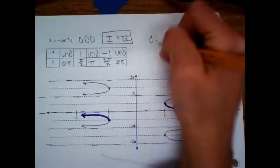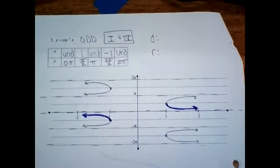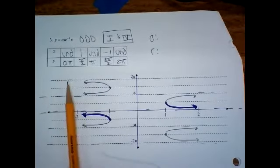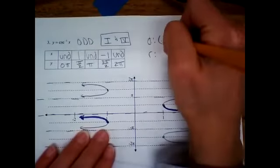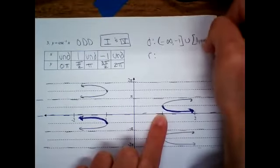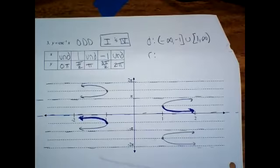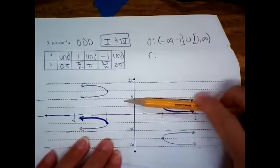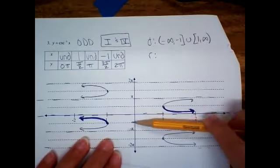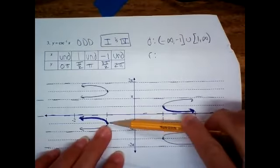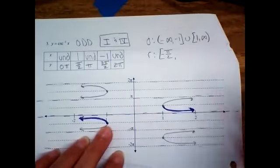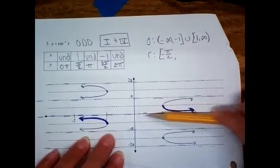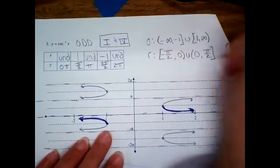Let's write the domain and range. Domain is left to right: negative infinity up to negative 1, union 1 to infinity. That's the range from before — now it's the domain. The range is going to be a little weird because we're only using the highlighted part. Going downwards to upwards, we start at negative pi over 2 and go to positive pi over 2, but we have to leave out zero because of the asymptote there. So you're skipping over zero.